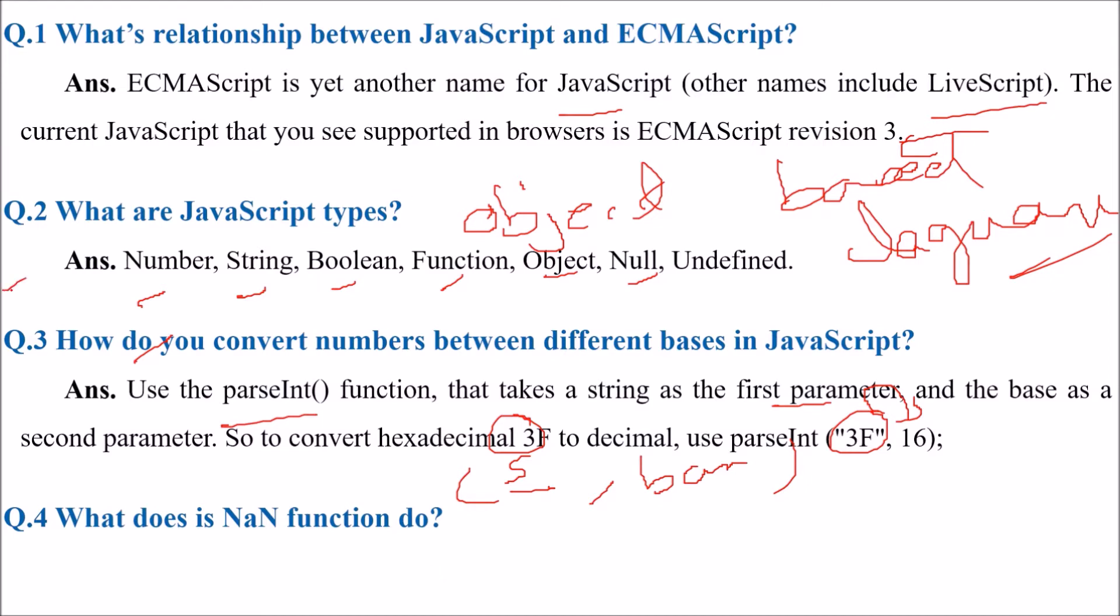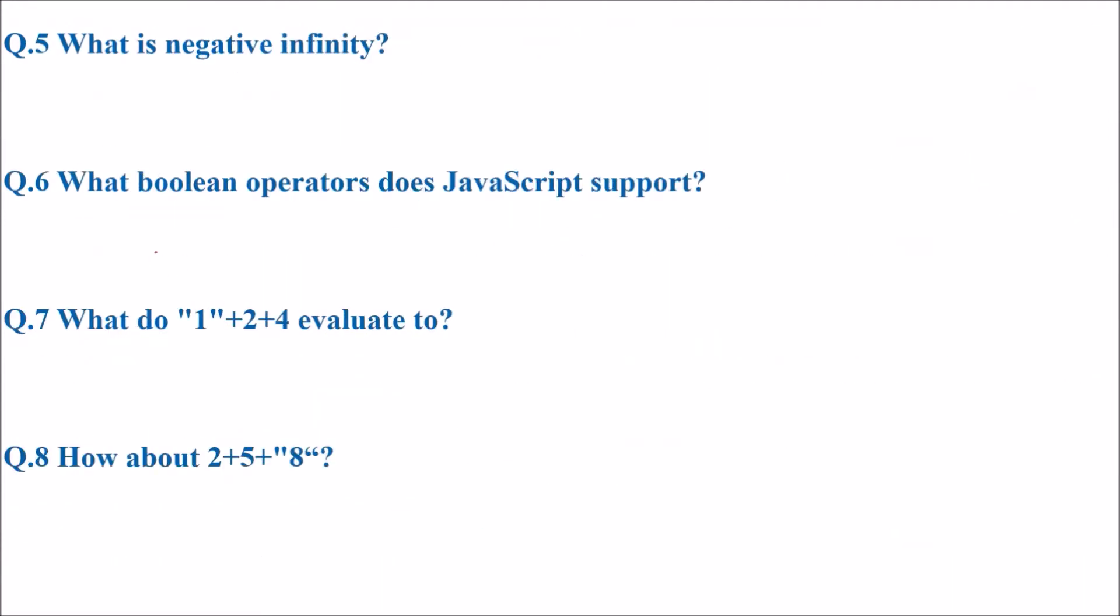What does this NaN function do? You will come across NaN a number of times. This returns true if the argument is not a number. NaN stands for not a number, so this is going to return true for that.